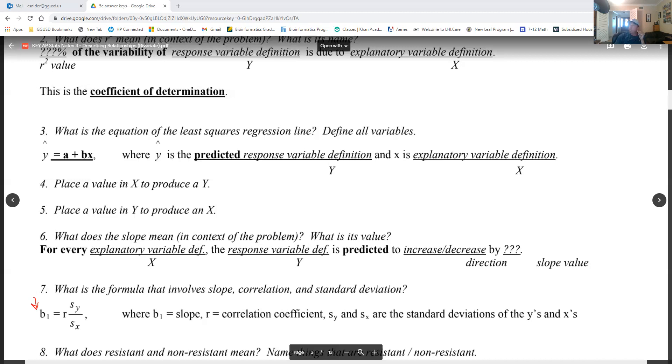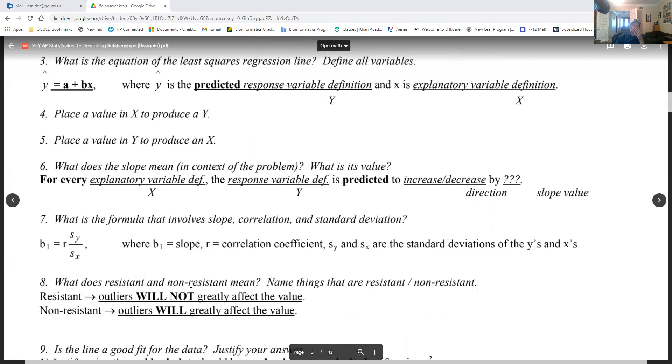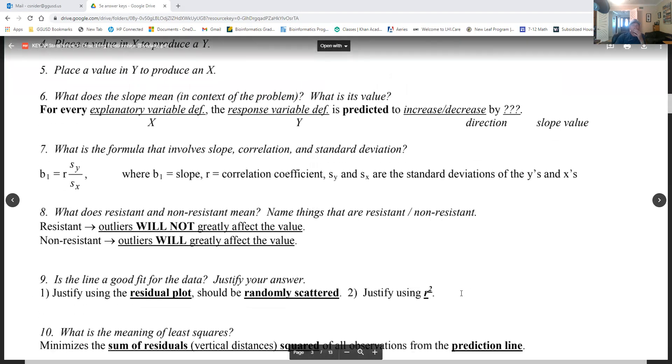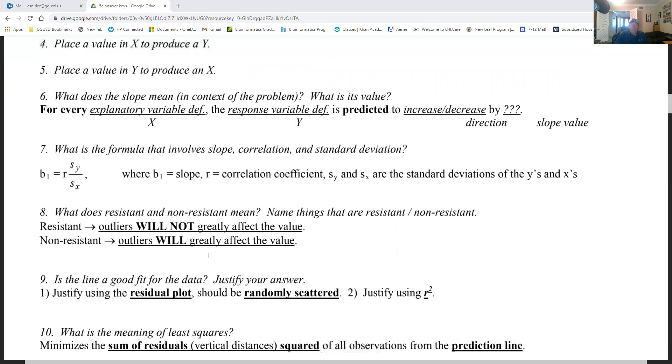Resistant and non-resistant: what do those mean? Resistant is outliers will not greatly affect the value, and non-resistant is outliers will greatly affect the value.